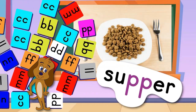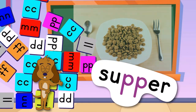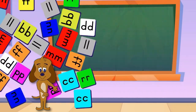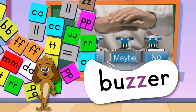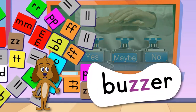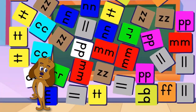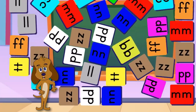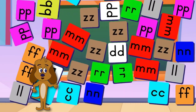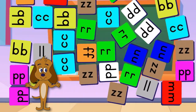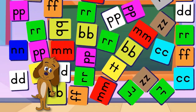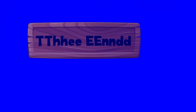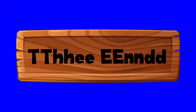P in supper, R in carrot, T in otter, Z in buzzer. Is it my imagination, or are there double letters everywhere?